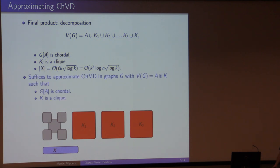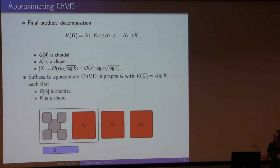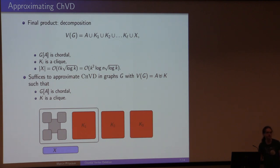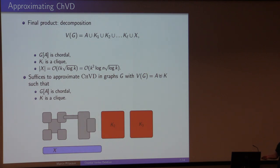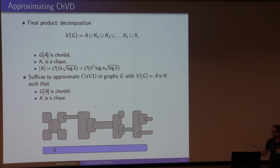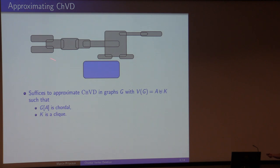Now we've reduced our problem to something simpler. We have a chordal graph and one of these cliques, with arbitrary edges between them, and we want to solve chordal vertex deletion on this combined graph. After solving it and deleting a few vertices, we get a chordal graph, then take the next clique, solve again, and so on. Since there are k log n cliques, if we get a decent approximation for adding one clique, we get a decent approximation overall.